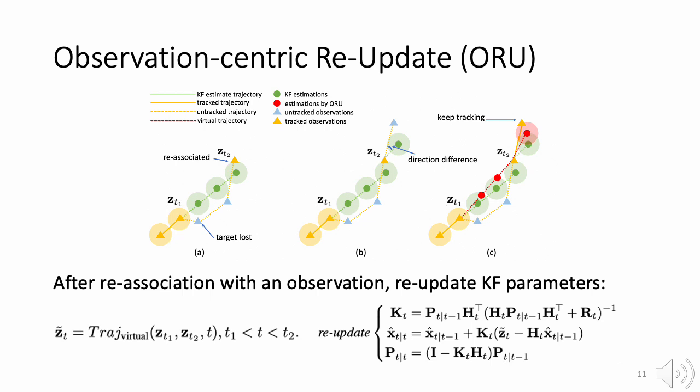On the other hand, the naive Kalman filter estimator to T3 is shown in green dotted line. Compared to the green dotted line, the virtual trajectory by ORU is closer to the true trajectory, and the Kalman filter parameters we updated by following this virtual trajectory will suffer from less variance.